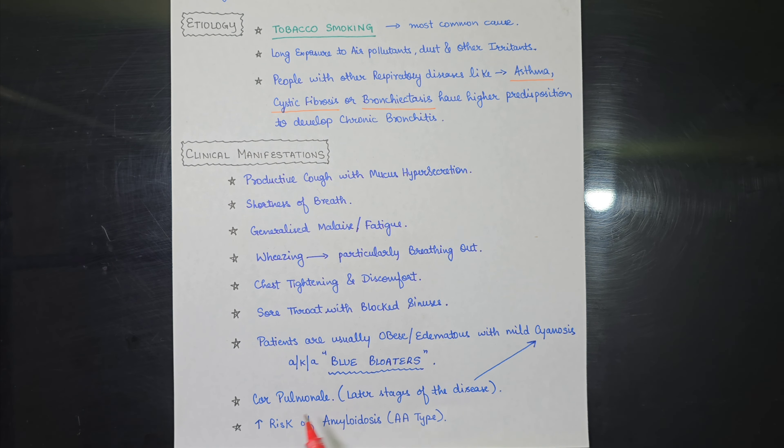Also in the later stages of the disease, it can lead to cor pulmonale. Cor pulmonale is the right side heart failure. So in the later stages, when if the disease does not correct or the patient did not get any good treatment, then it can lead to cor pulmonale in the later stages of the disease.